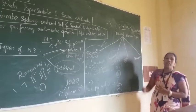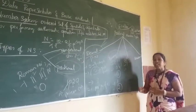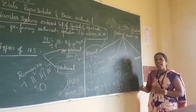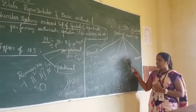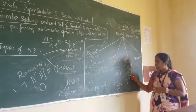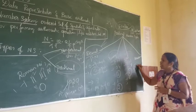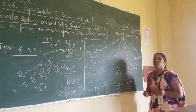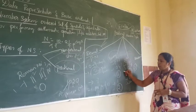The octal number system is a positional number system that takes symbols from 0 to 7. The base or radix is 8, and the maximum digit value is 7. Since 8 equals 2 to the power of 3, three bits are used for representing an octal digit in binary form.